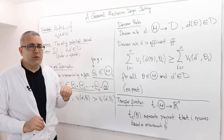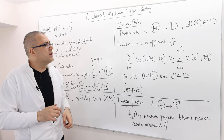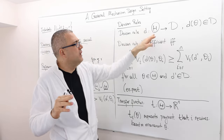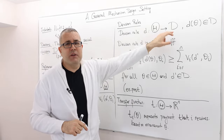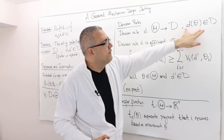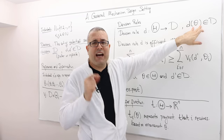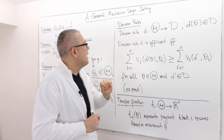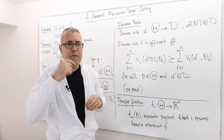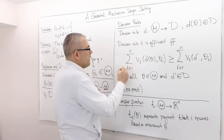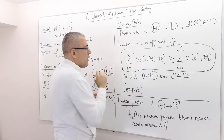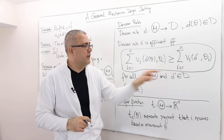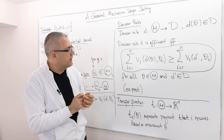The next thing to clarify is decision rules. A decision rule is a function which maps each type profile into a decision — an element in D. So d is a function where the input is theta, a type profile, and the output is just an element in D.